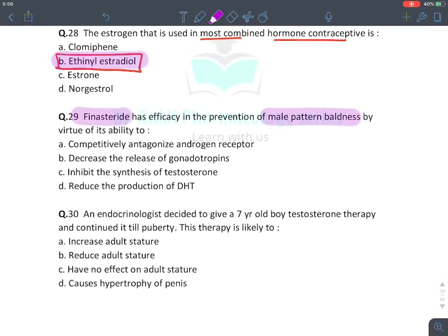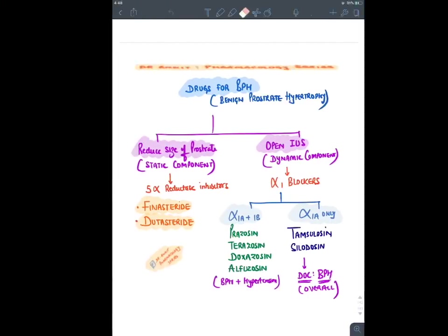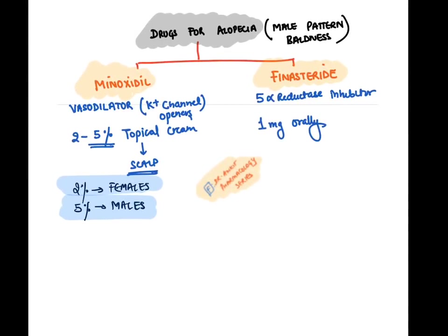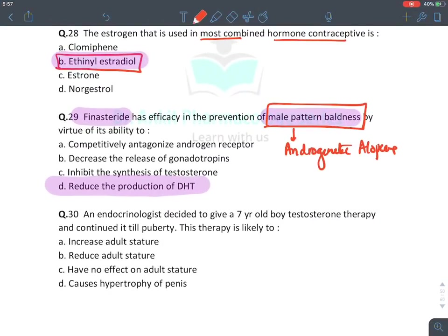Finasteride has efficacy in male pattern baldness (androgenetic alopecia) by reducing DHT production. Only two drugs are approved for male pattern baldness: minoxidil (vasodilator/potassium channel opener, increases blood supply to hair follicles — 2% topically for females, 5% for males) and finasteride (5-alpha reductase inhibitor, inhibits testosterone-to-DHT conversion — 1 mg orally).